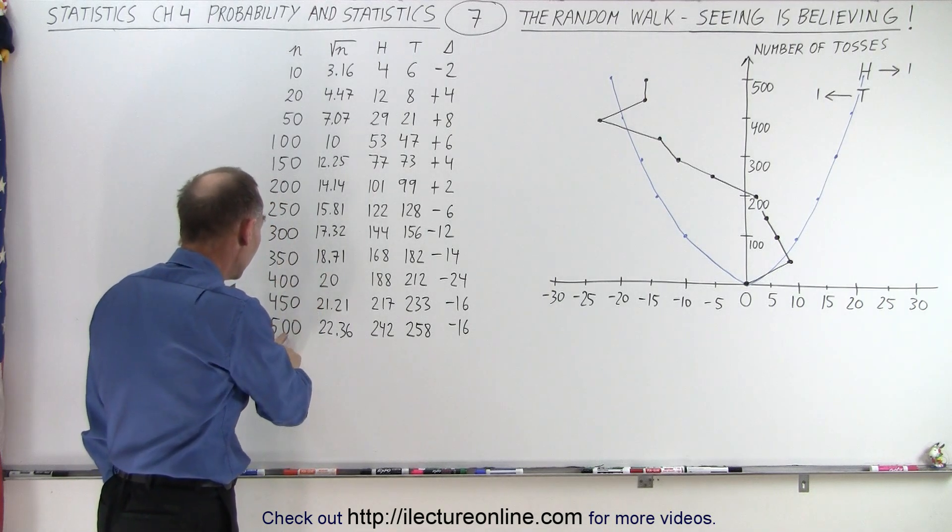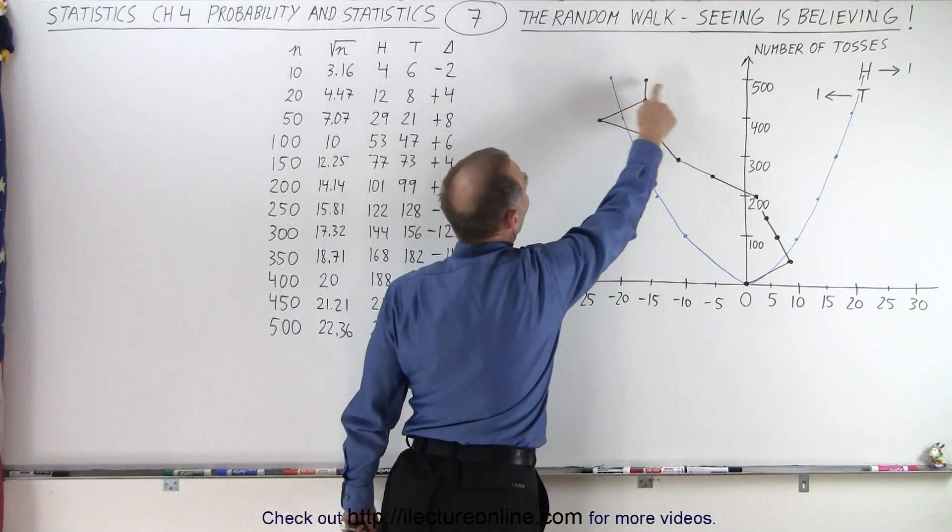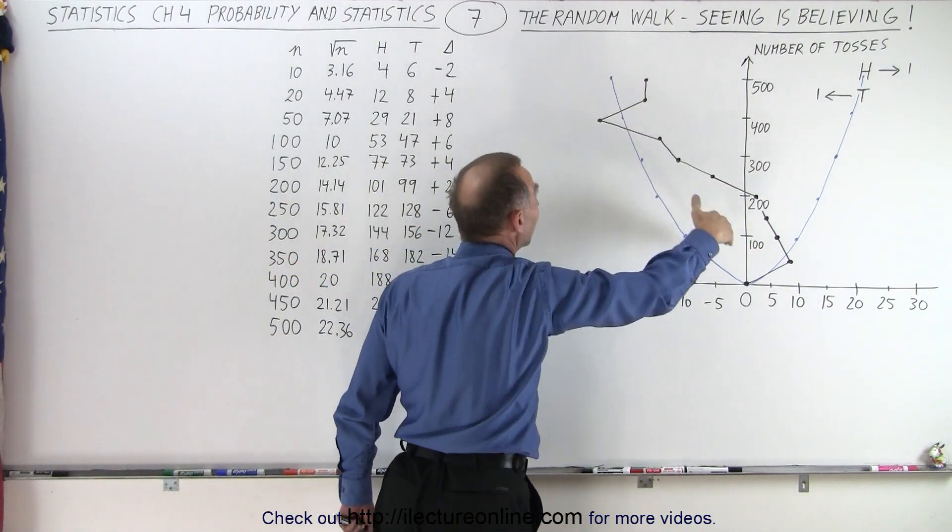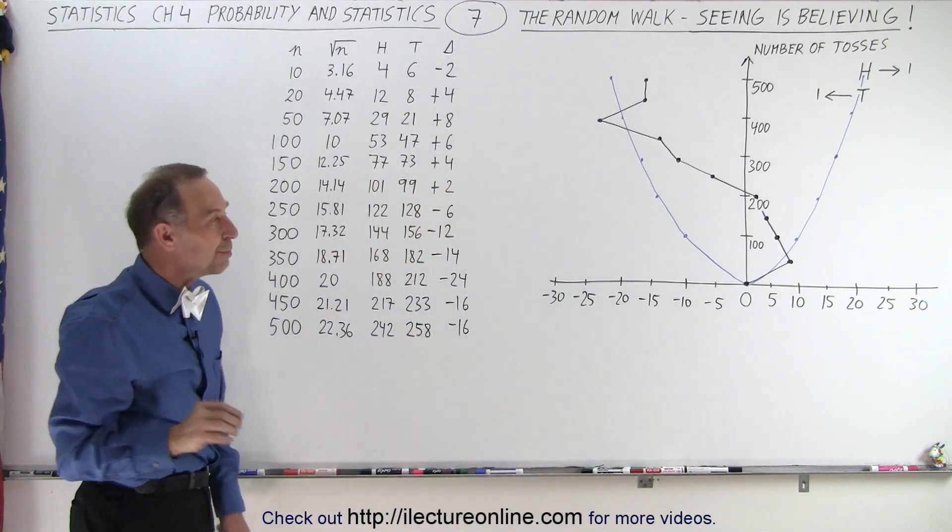Then as I continued to toss, all the way up to 500, then I was only 16 units away from the origin, but you can see that I was fairly close to the predicted value. It does seem to be the case.